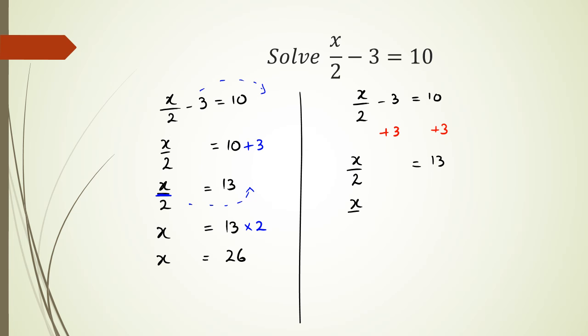And from here, now, I need to get rid of my 2. Therefore, I need to multiply both sides by 2. Thus, these two get eliminated. And I'm left over with x equals 13 times 2, which is 26.